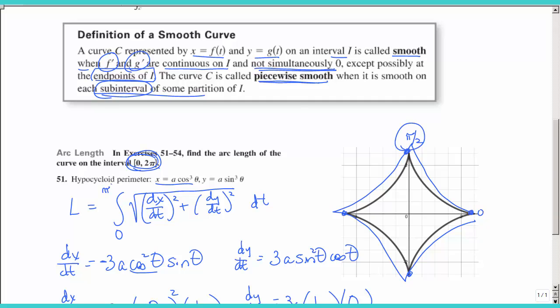We could go from zero to pi over two, which would get us from here to here, and if we multiply this length times four, that would give us the whole perimeter.